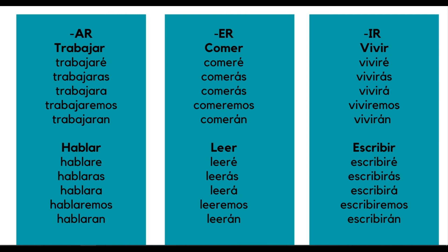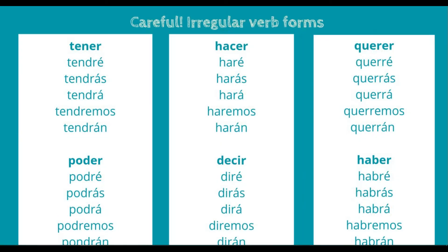But if you look at the next column, these are irregular verb forms — and they change completely. Some of them you add dr; some add a double r; some delete part of the word and replace it with r. For tener — to have: tendré, tendrás, tendrá, tendremos, tendrán. Poder — to be able to — changes the same way: podré, podrás, podrá, podremos, podrán. Hacer is similar to decir — to say: haré, harás, hará, haremos, harán. And decir: diré, dirás, dirá, diremos, dirán. The last one is querer — you add a double r: querré, querrás, querrá, querremos, querrán. I know it sounds like a tongue twister, but that's how we say it — and it's great practice for your Spanish r pronunciation.